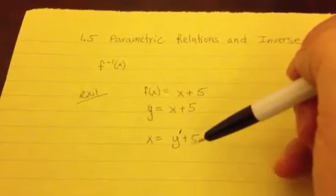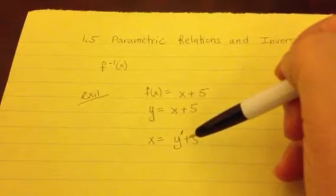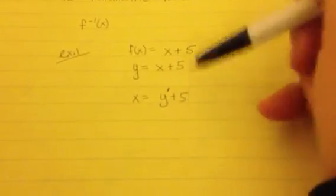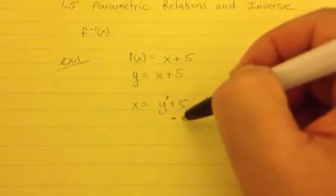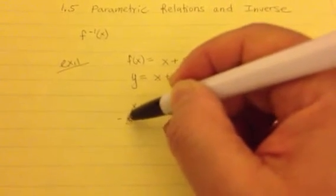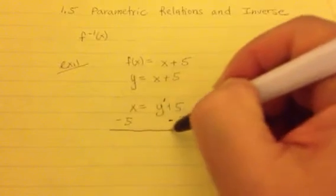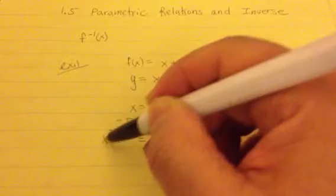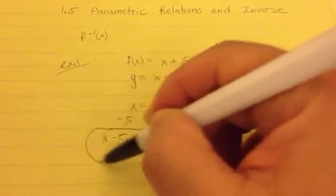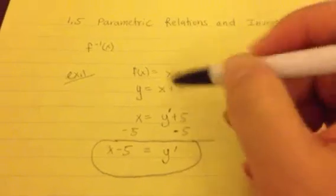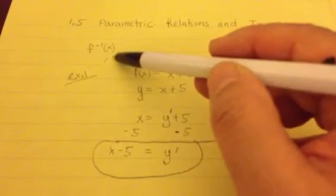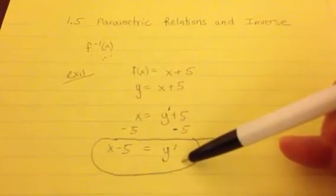Now step 3 is to get y by itself. We need to get rid of the 5, so we subtract 5 from both sides. That leaves us with y prime equals x minus 5. That's your inverse right there. So whenever you see f of negative 1 of x, that's the same thing as this inverse we just found.